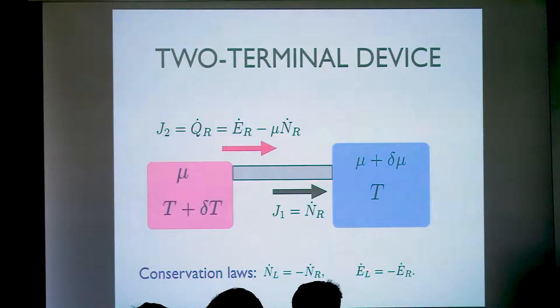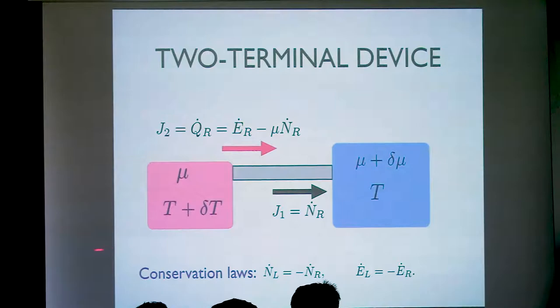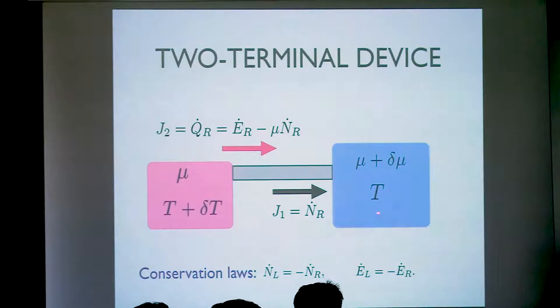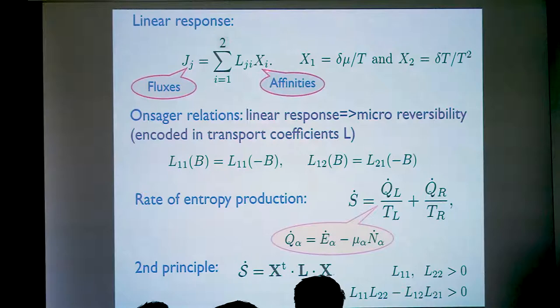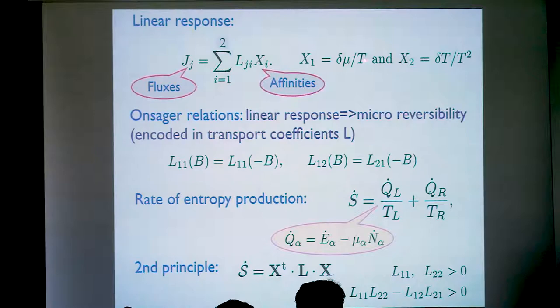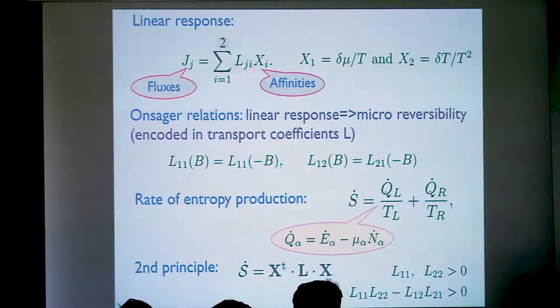These two combined fluxes take place in a way that two fundamental conservation laws are fulfilled: namely the conservation of charge — the charge leaving the left reservoir has to be injected into the right one — and the same happens with the energy. In the linear response regime this theory is very simple and appealing. It is formulated by assuming a linear relation between the two relevant fluxes — in our case heat and charge — and the affinities, basically the difference of chemical potential and difference of temperature. These are the Onsager transport coefficients.